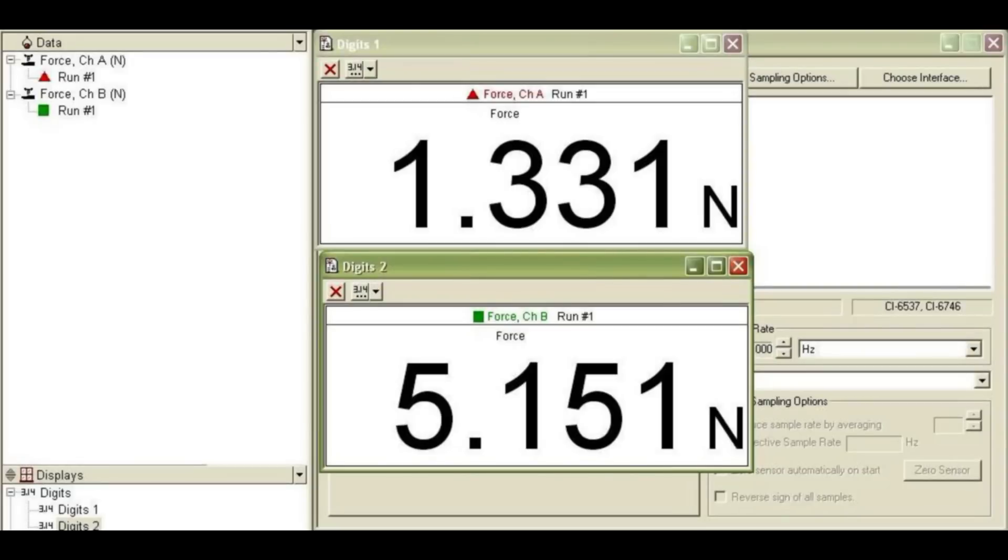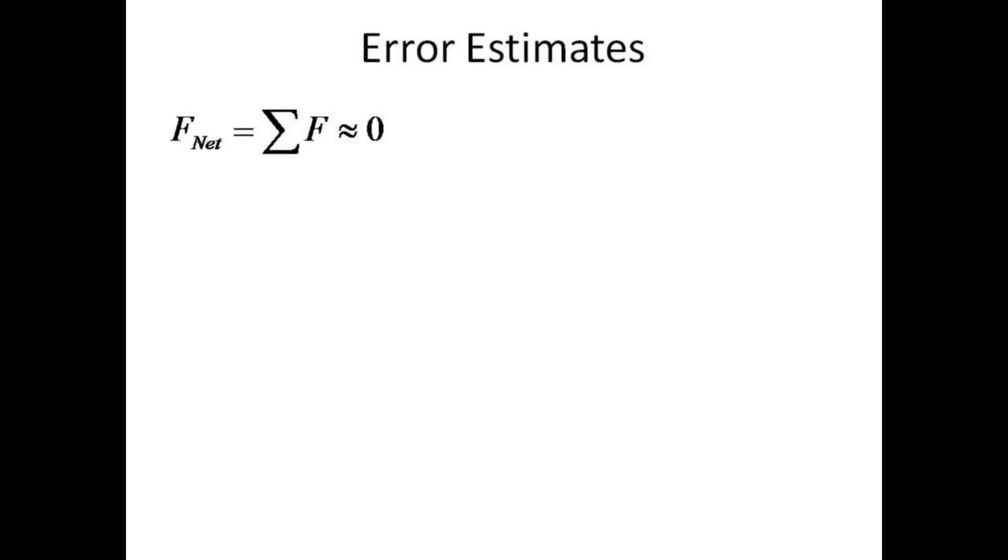Drag and drop digits displays onto each force sensor and push the start button to measure the two forces. Obviously, you expect more force on the sensor closest to the load weight. Add the upward forces and subtract the downward forces to obtain the nearly zero net force. Divide by the upward forces to get a percent error.